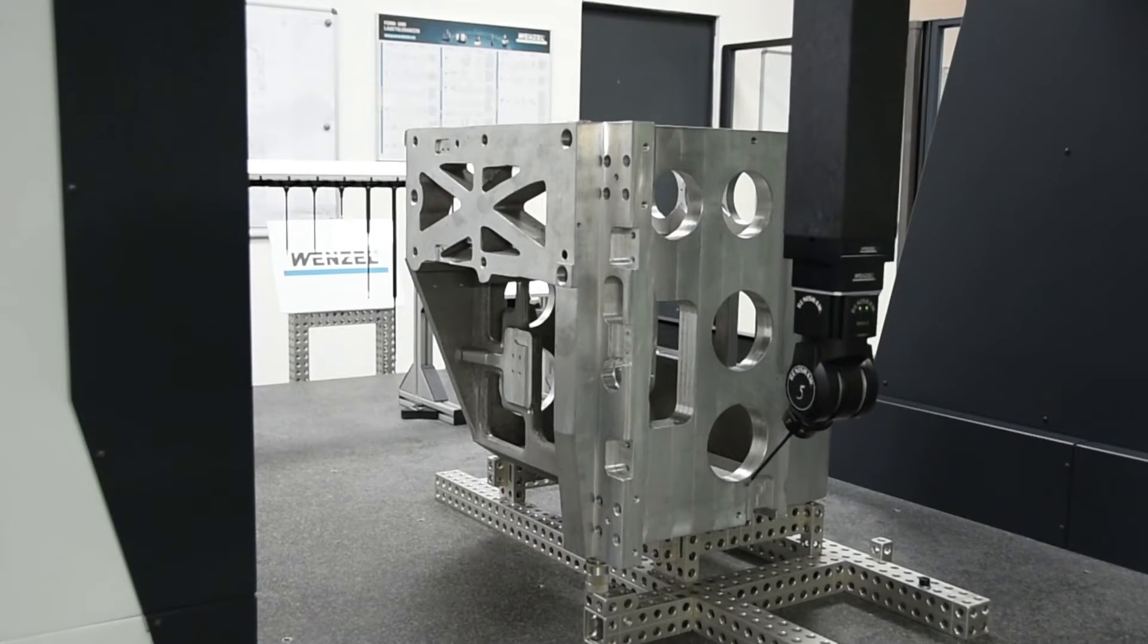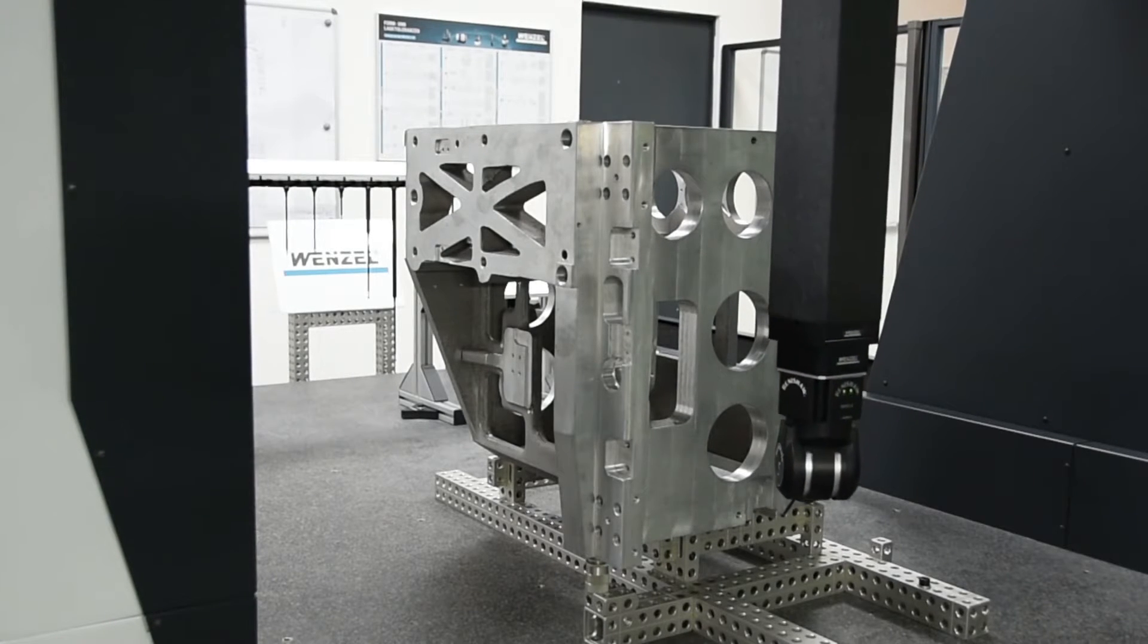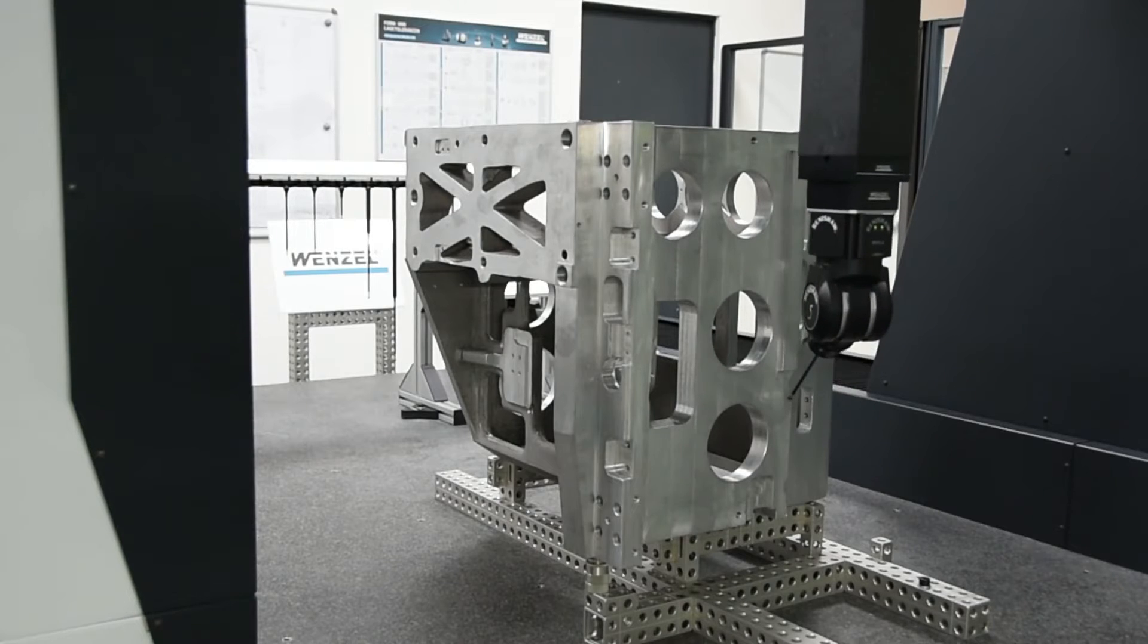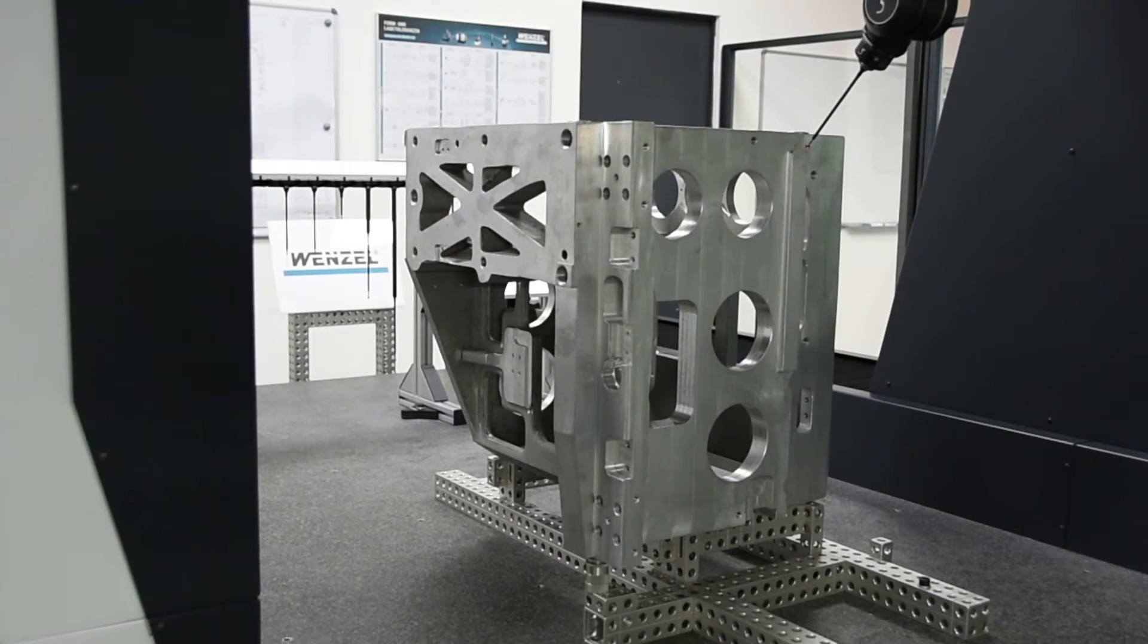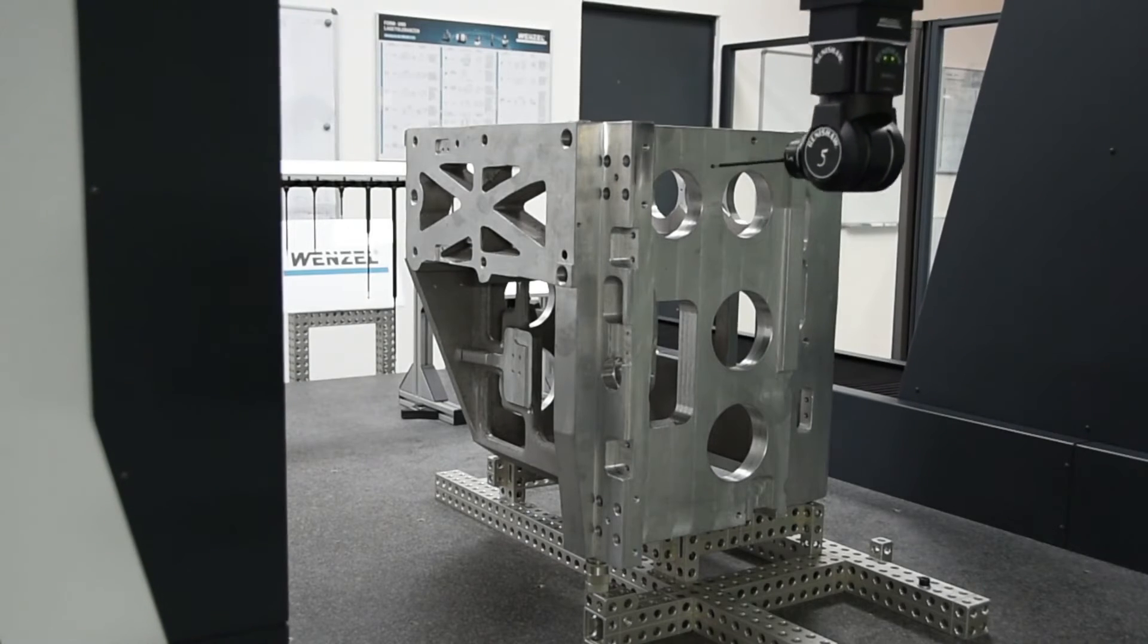Conventional scanning systems had the disadvantage that there was very limited access to the workpiece. With Wenzel machines and the REVO 2, almost all features of a workpiece can now be measured in one clamping.